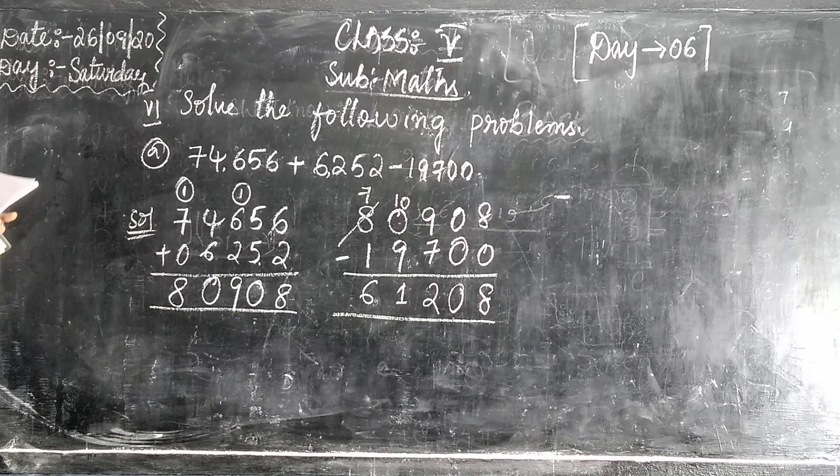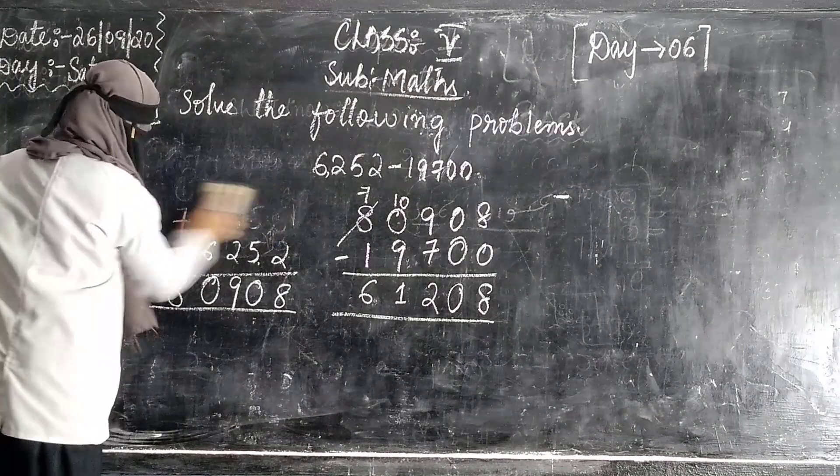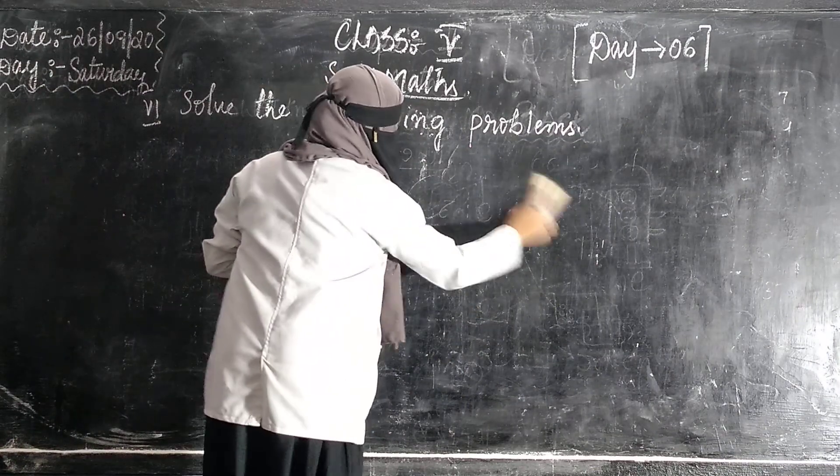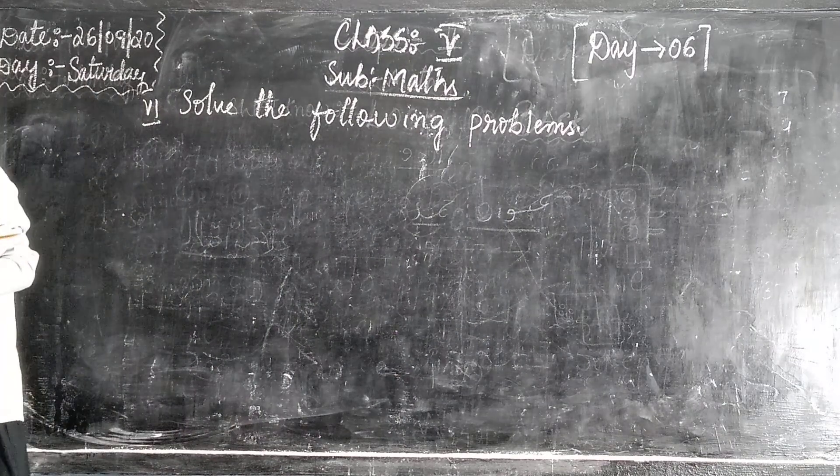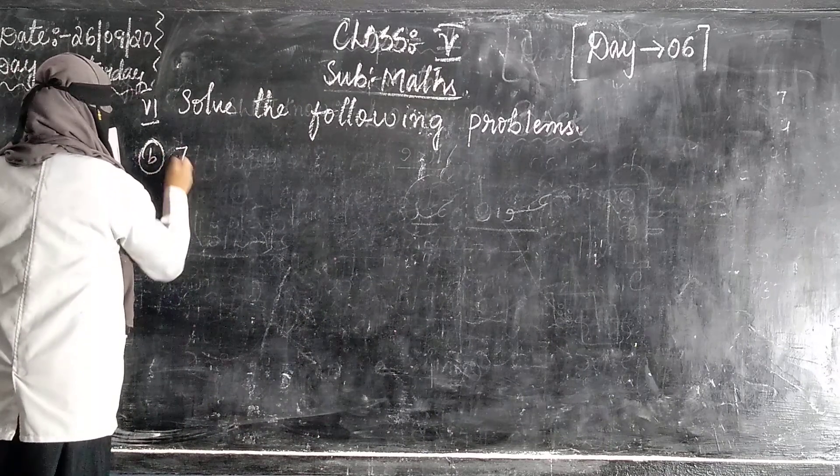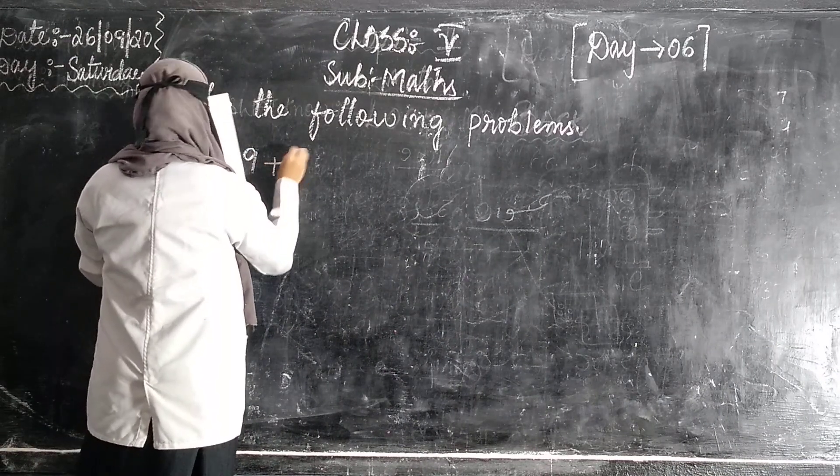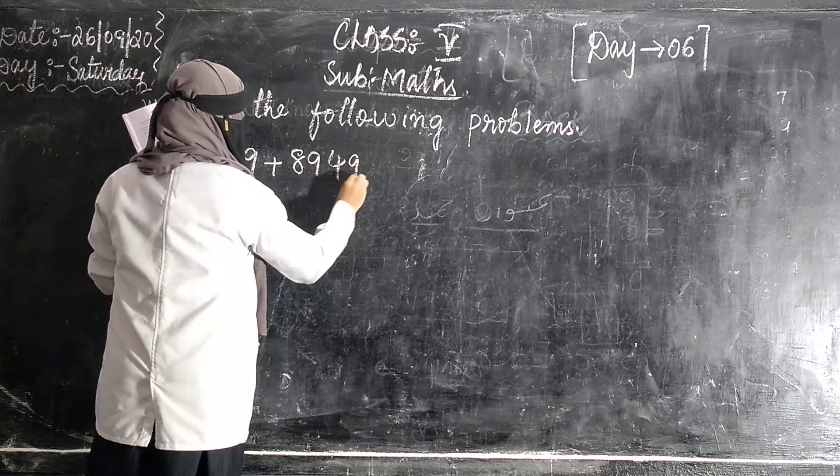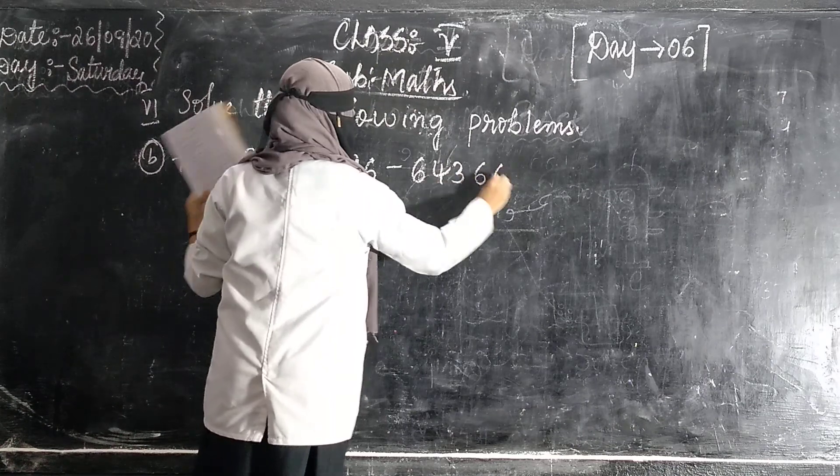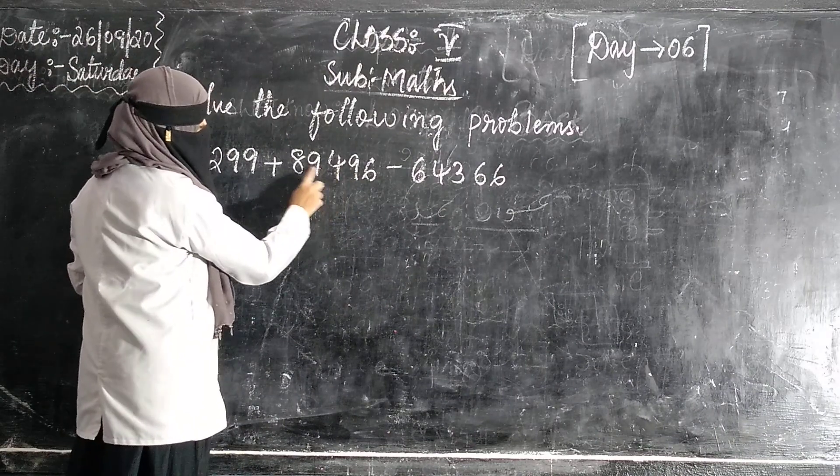Our next question is, question number B. 79,299 plus 89,496 minus 64,366.